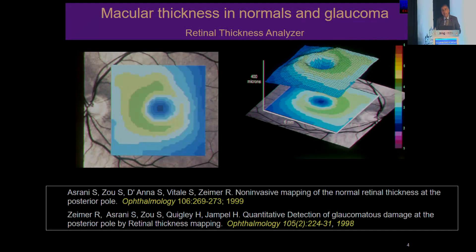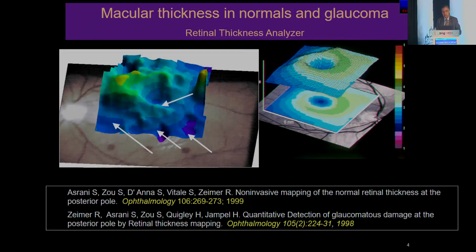Macular thickness in glaucoma and normals was not known until the late 90s. It was only in the late 90s that we created an instrument called the retinal thickness analyzer, which was the precursor of the OCT, that allowed us to look at normal retinal thickness and retinal thickness in glaucoma. The only paper I could come across was Van Buren's paper on the description of ganglion cells from 1960. There was nothing else written since then on the effect of glaucoma damage in the macula.